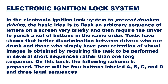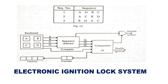The following scheme is proposed: there are four buttons labeled A, B, C, D and three legal sequences. As shown in the diagram, the three sequences are displayed, the driver views them, then uses the keyboard to punch those sequences in the correct order. A, B, C, D are punched and the input goes to the sequence detector.